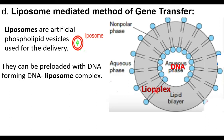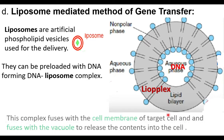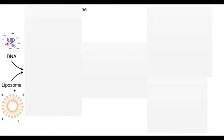The lipoplex fuses or joins on the surface of the cell membrane, then moves into the cell, and joins with the membrane of the vacuole. Then the lipoplex opens and the DNA escapes and enters into the nucleus. The complex fuses with the cell membrane of the target cell, fuses with the vacuole, and releases its content — the DNA — into the cell, which then moves into the nucleus.